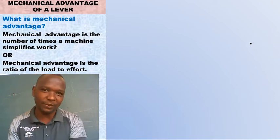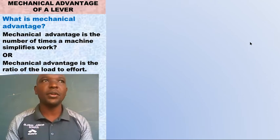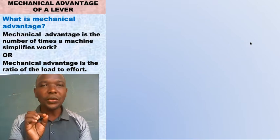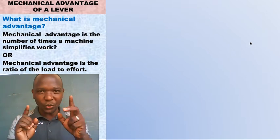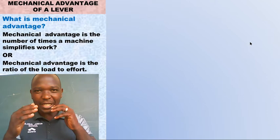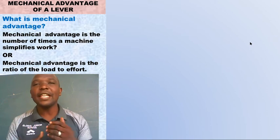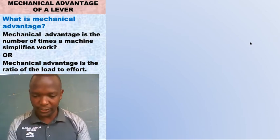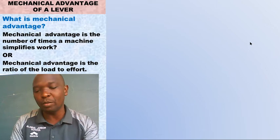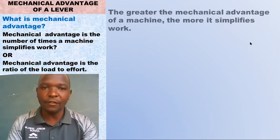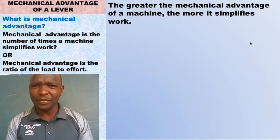Remember in math — if they say six boys share mangoes in the ratio of two to three, you get the concept. Here, mechanical advantage is the number of times a machine simplifies work, or it is the ratio of load to effort. To understand this well, we need to understand some other keywords in mechanical advantage of a machine or lever.